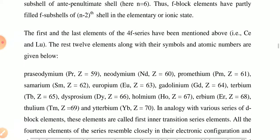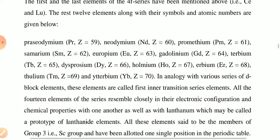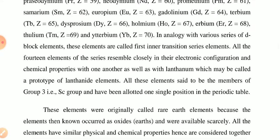The first and last elements of the 4f series are cerium and lutetium, and the remaining 12 elements along with their symbols are shown here. You can see the elements of the lanthanides. These F-block elements are called inner first inner transition series elements.